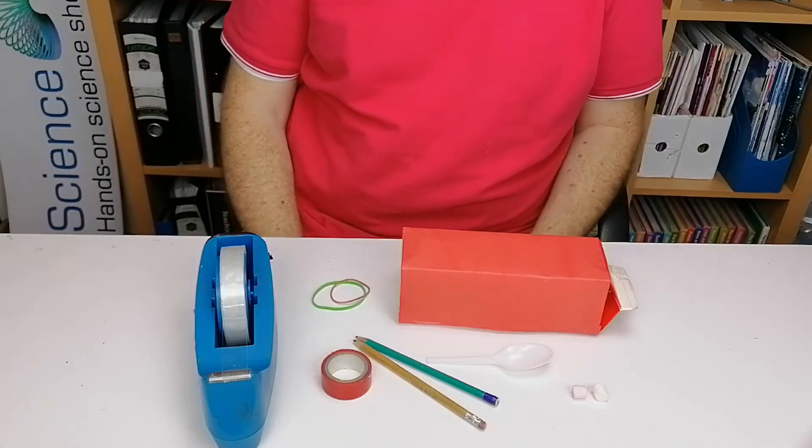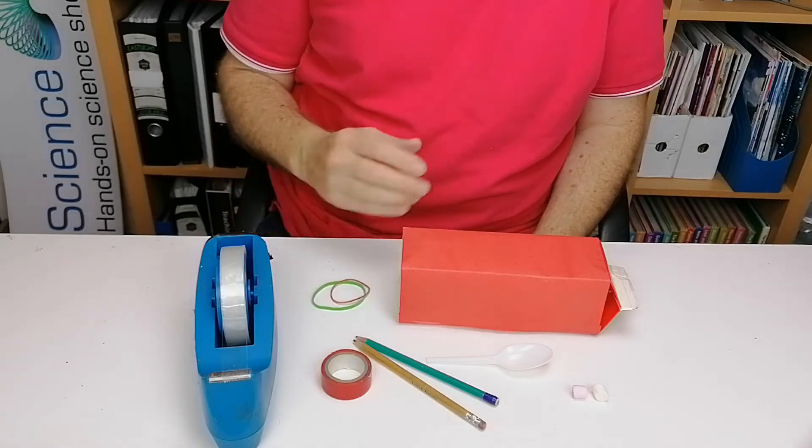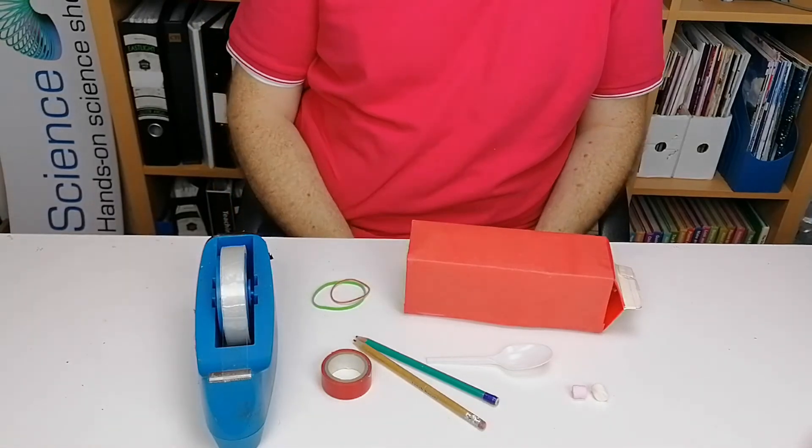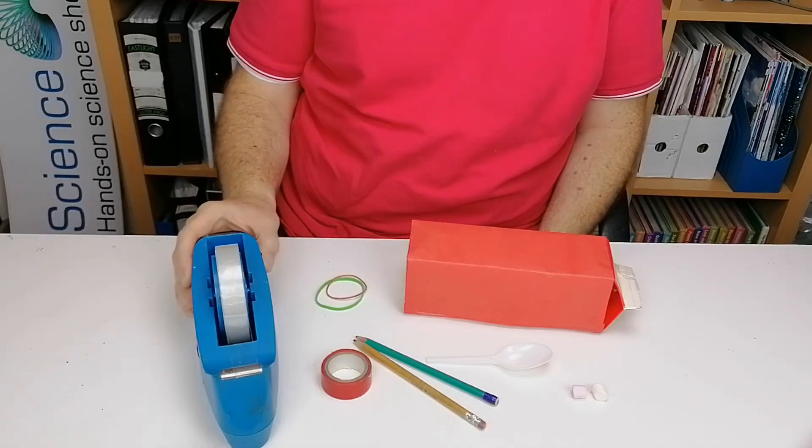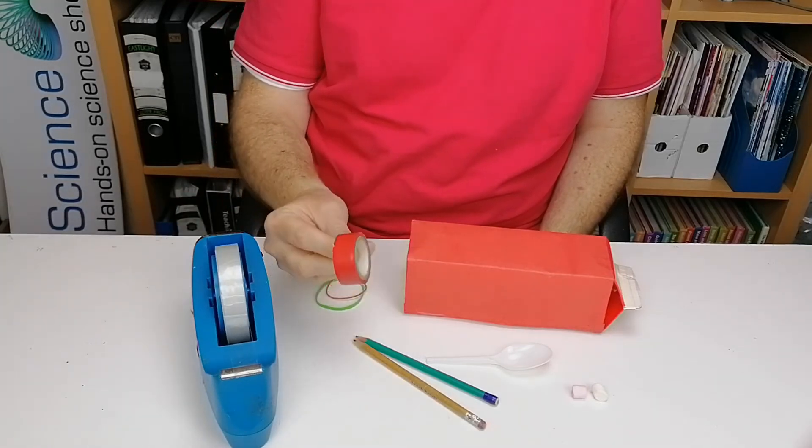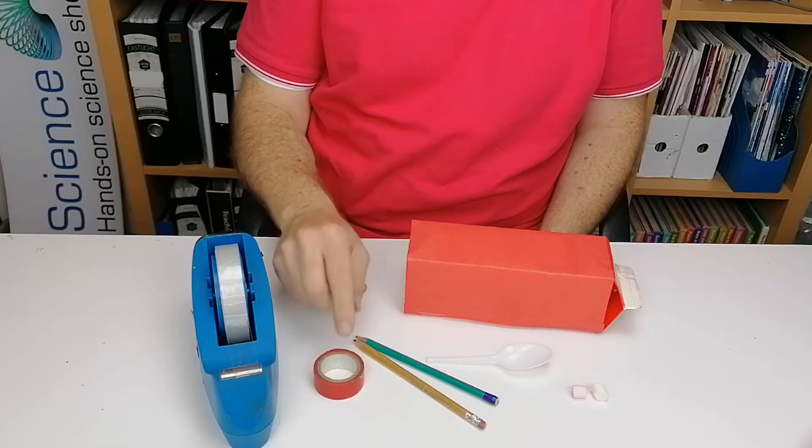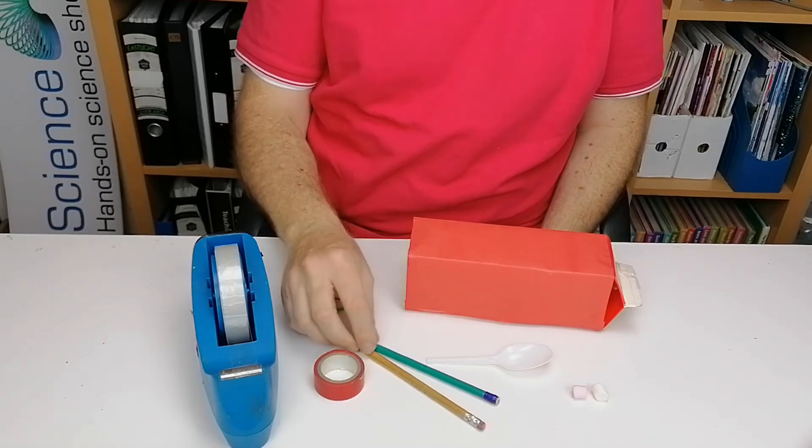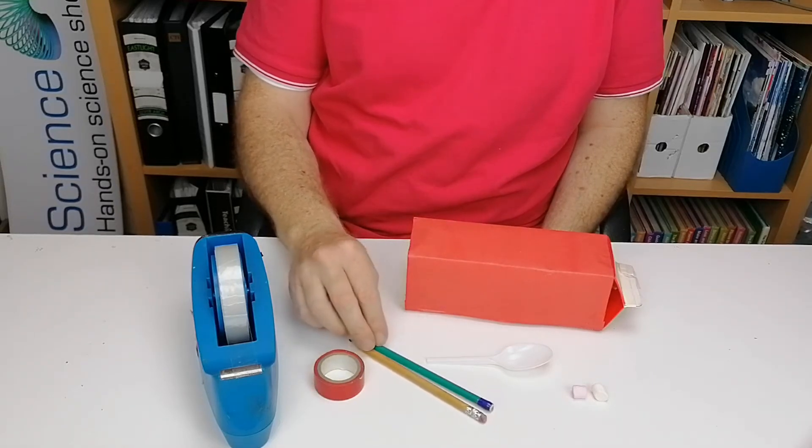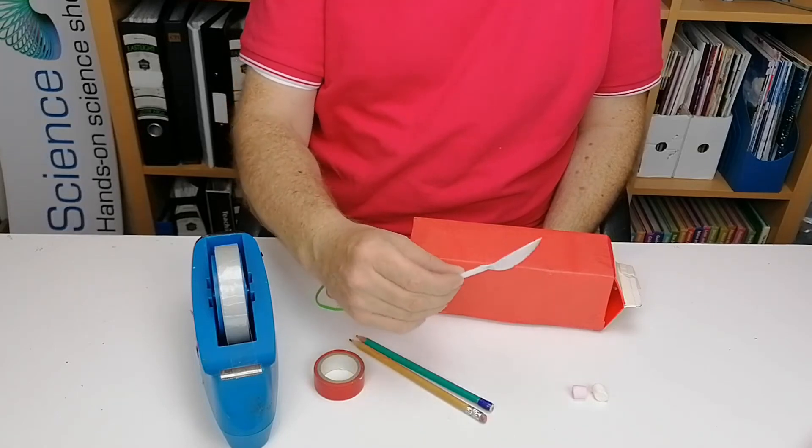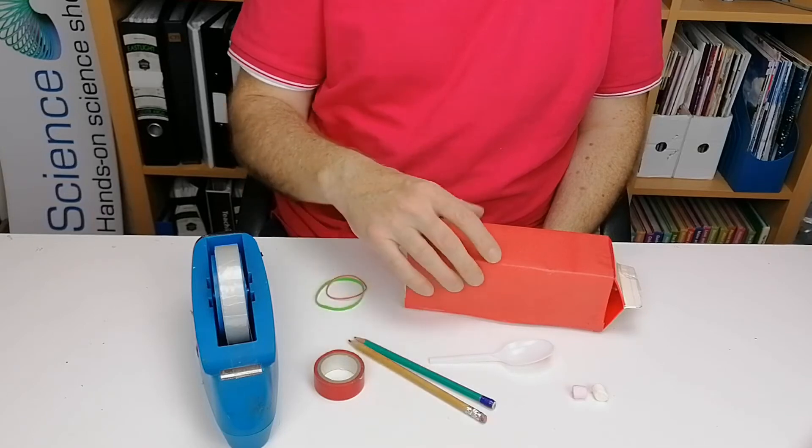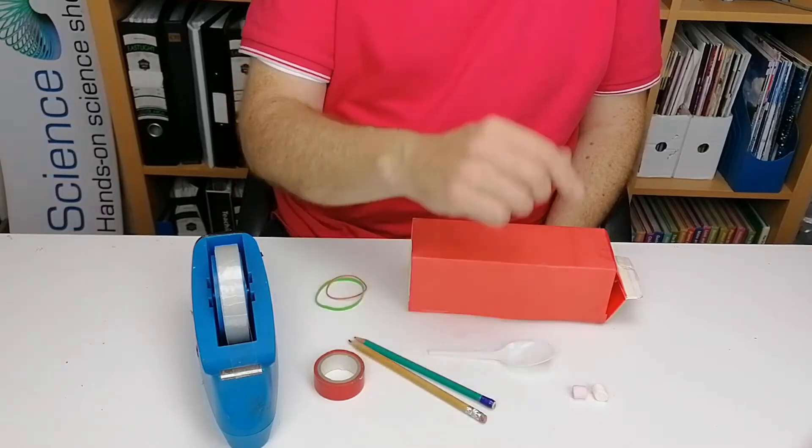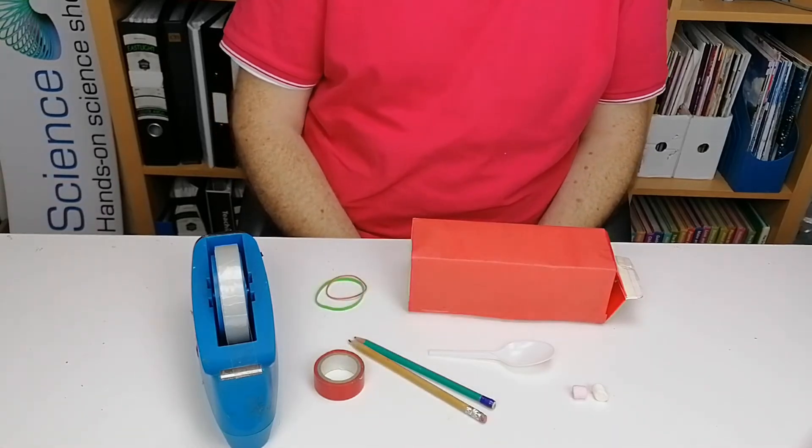In this activity we're going to make a marshmallow catapult. For that you'll need a box—I'm using a fruit juice carton—some elastic bands and sellotape. You also might need some stronger tape than sellotape, so I'm going to use some insulation tape as well to reinforce it, two pencils, a plastic spoon (you don't want it too long, even a teaspoon is fine), and some marshmallows for firing. Now you might need a few more marshmallows for eating while doing this experiment.